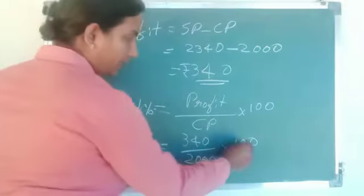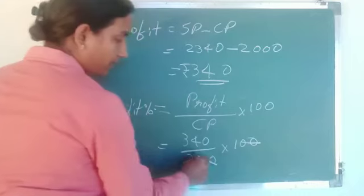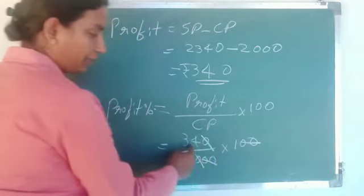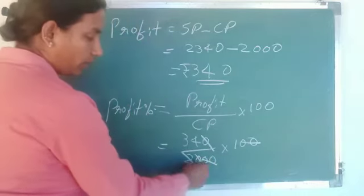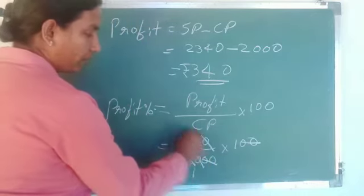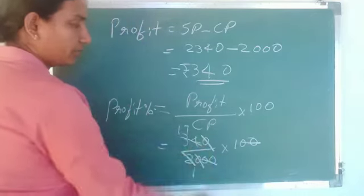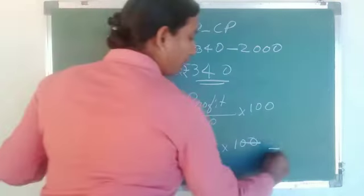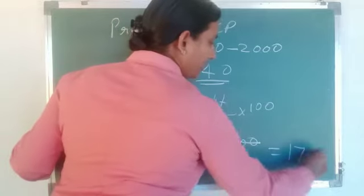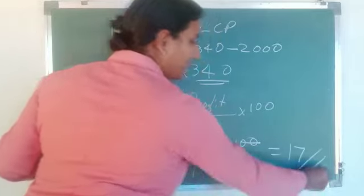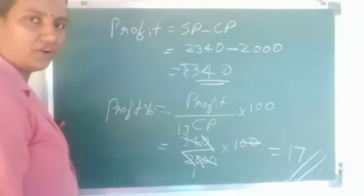Simplifying: cancel two zeros, giving 34 by 2, which equals 17. So profit percentage is 17%.